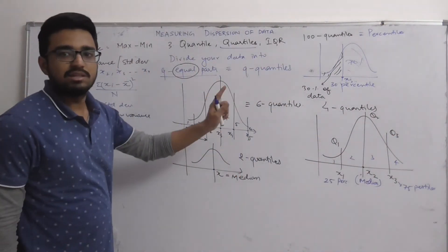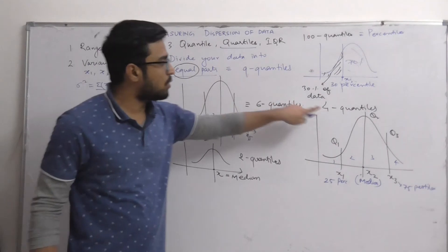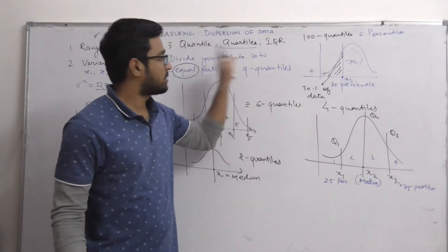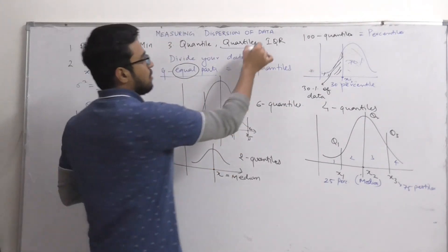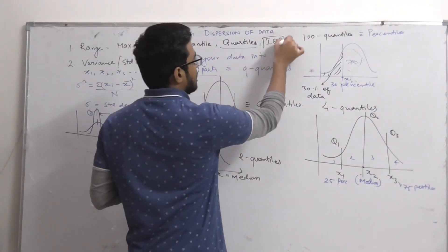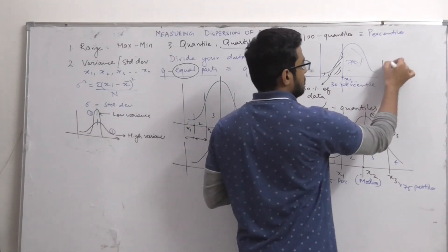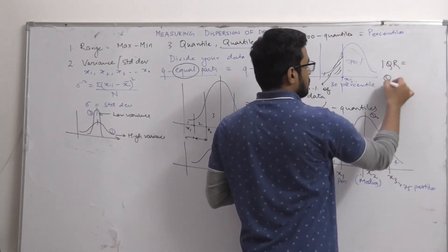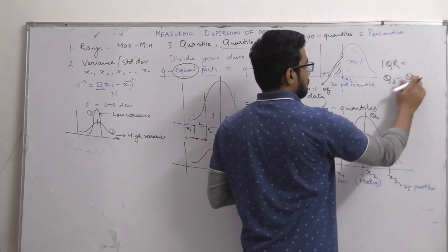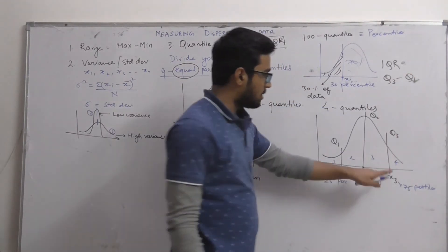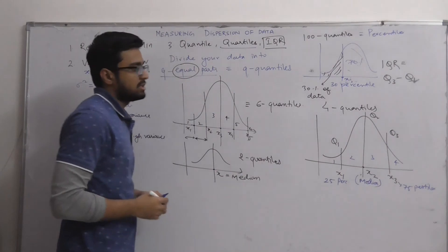This is the basic difference between quantiles and quartiles. The interquartile range, IQR, is defined as Q3 minus Q1 — the third quartile minus the first quartile.